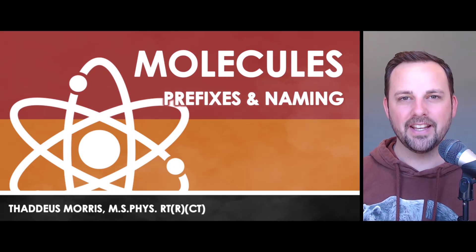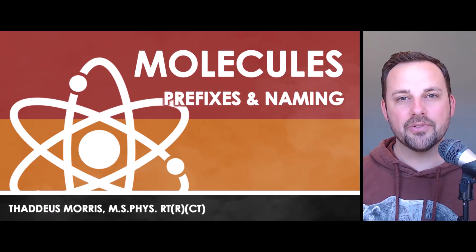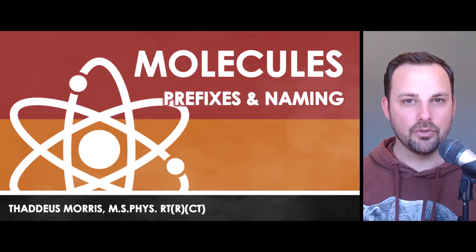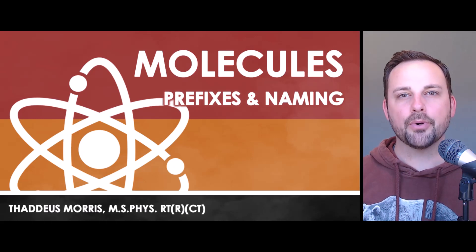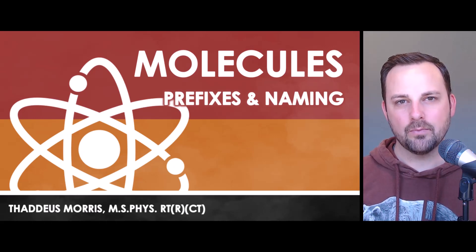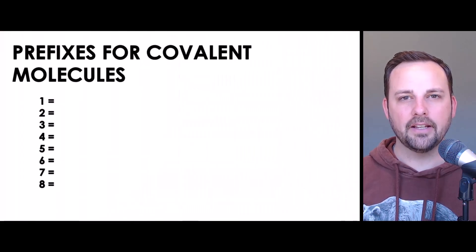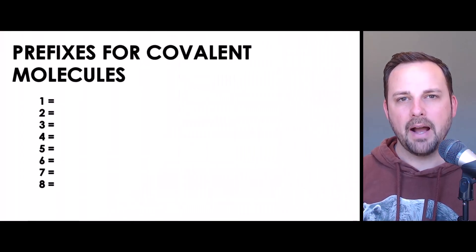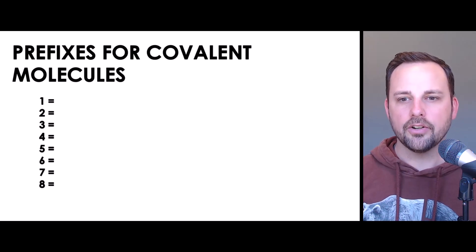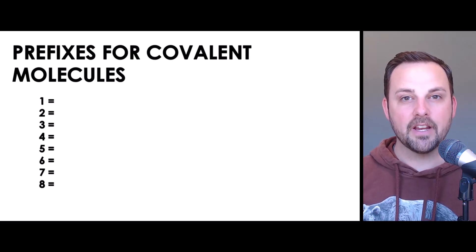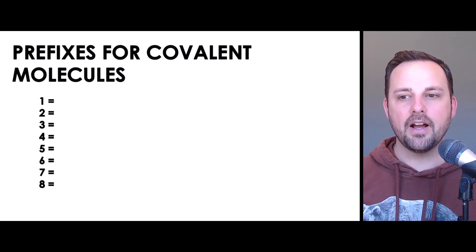Hey everybody, thanks for watching. In this chemistry lesson we're talking about molecules and the prefixes and naming system we use to describe covalent molecules. First, let's begin by talking about prefixes. Molecules formed by covalent bonds are described using these specific prefixes that tell us the number of atoms within the molecule.